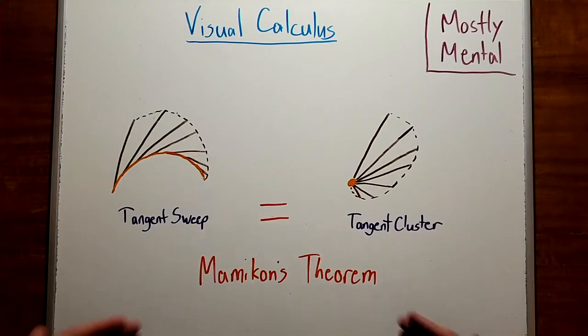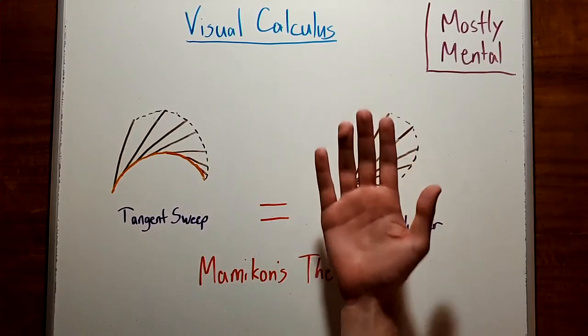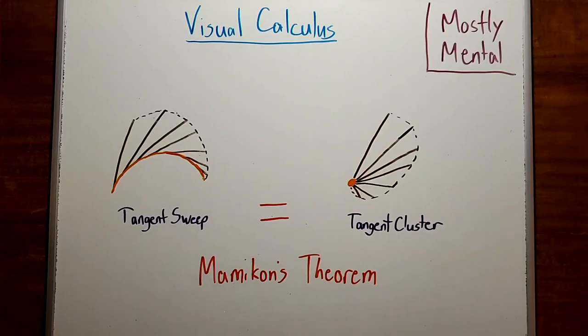This result, Mamikon's theorem, is a really powerful tool that lets us find areas for complicated regions, even when traditional calculus can't. And I think it shows us some really beautiful geometry along the way. Thank you for watching. I hope to see you again soon.